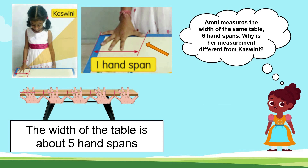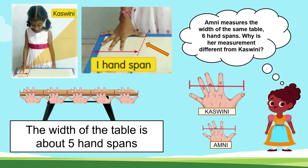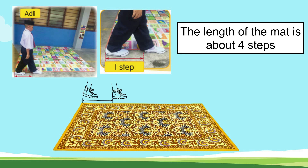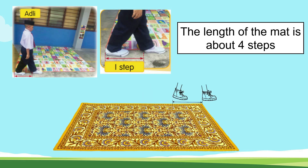Let's see — this is Kashmini's hand and this is Amni's hand. Because Amni has a smaller hand span, when she measures the table it is six hand spans. We can also measure length using our steps. So the length of the mat is four steps.